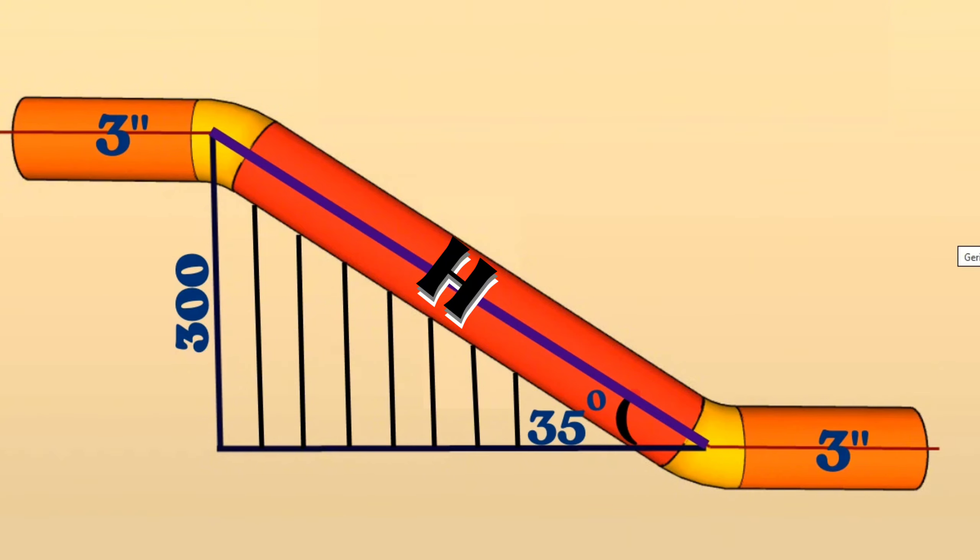The shorter side is opposite the 35 degree angle and the hypotenuse is opposite the 90 degree angle. We can find the hypotenuse by using the trigonometric function.